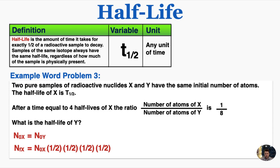So the final amount of X, which I'll call N subscript f, is equal to the original amount times 4 half-lives, so that's (1/2) × (1/2) × (1/2) × (1/2), which is equal to one-sixteenth. And I know that the original amount of X is also the original amount of Y, so I can set that equal to one-sixteenth times the original amount of Y.